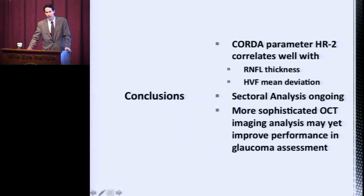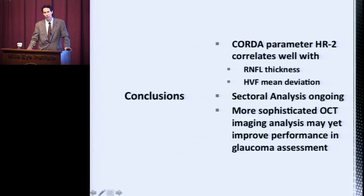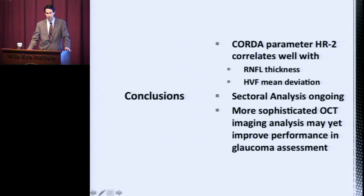I'm not going to be able to share much more information than that today, but I would summarize by saying our preliminary data shows that there may be some potential here by looking at a more sophisticated analysis of the OCT signal to allow us to really get at subcomponents that more directly correlate with our patient's glaucoma status — both visual field status, neurofiber layer thickness status, and possibly other parameters as well. So we have ongoing studies now that we're pursuing with the CORDA analysis. Thank you very much.